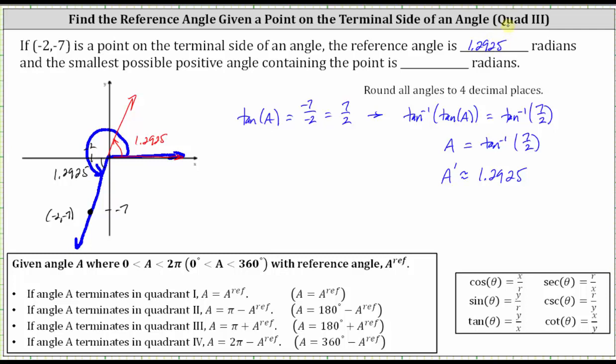And now that we know the reference angle for the smallest possible positive angle in the third quadrant, we can determine the measure by taking pi radians and then adding the reference angle. So the angle we are looking for, angle A, is equal to pi radians plus 1.2925 radians. If we take a look at our notes below, if we know angle A is between zero and two pi radians, and it terminates in quadrant three, angle A is equal to pi plus the reference angle.